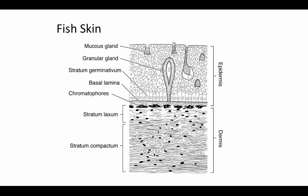Epidermal cells are constantly being regenerated from the bottom-most layer of cells called the stratum germinativum. There is a membrane called the basal lamina that separates the dermis from the epidermis, and directly adjacent to it is the stratum germinativum — the layer of actively dividing cells responsible for all regeneration of the epidermis. In fish, these epidermal cells are helped by a layer of mucus covering the skin that also helps protect against microbial infection and abrasion, produced by unicellular mucus glands.